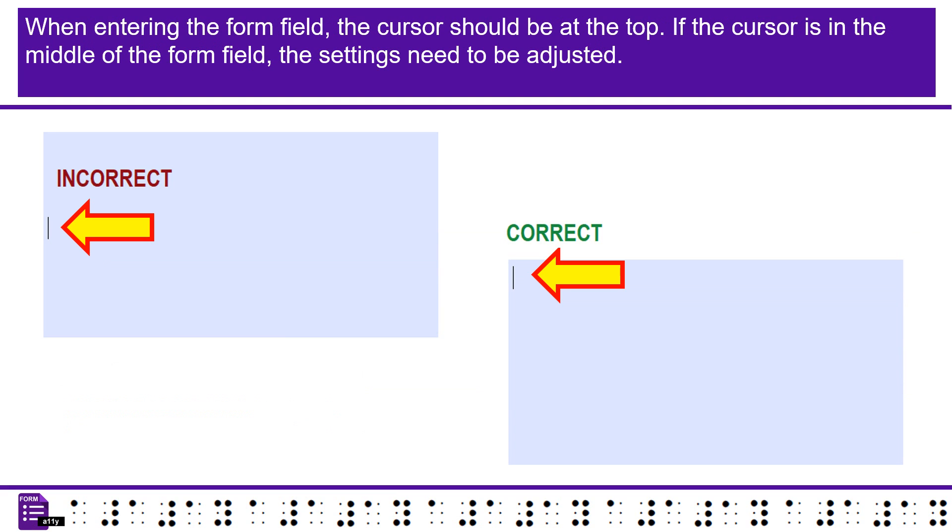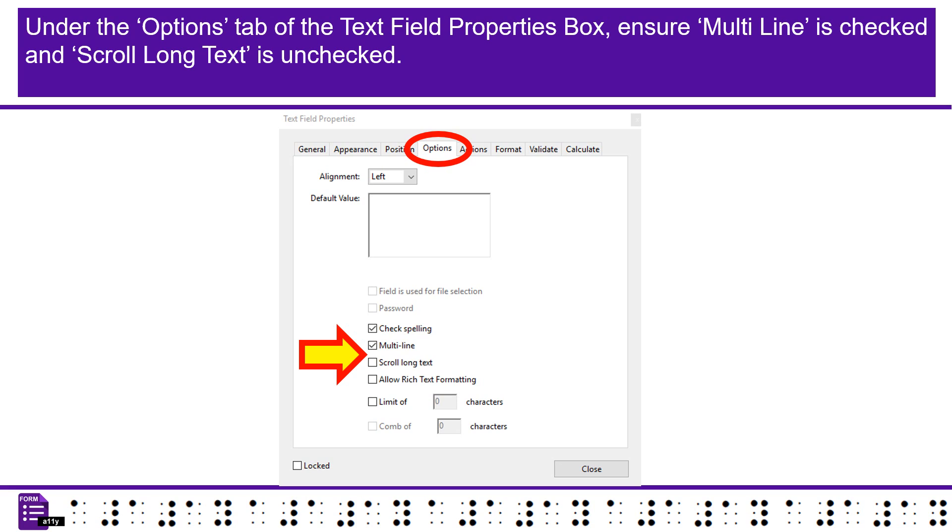When entering the Form field, the cursor should be at the top. If the cursor is in the middle of the Form field, the settings need to be adjusted. Under the Options tab of the Text Field Properties box, ensure multi-line is checked and scroll long text is unchecked.